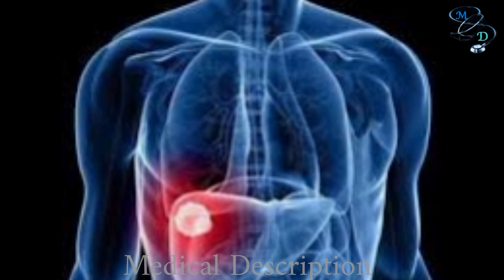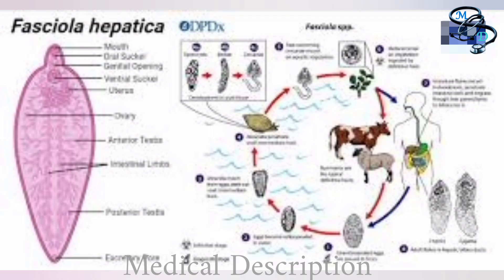Fascioliasis is a parasitic infection typically caused by Fasciola hepatica, which is also called the common liver fluke or the sheep liver fluke. A related parasite, Fasciola gigantica, can also infect people. Fascioliasis is found on all continents except Antarctica, in over 70 countries, especially where there are sheep or cattle. People usually become infected by eating raw watercress or other water plants contaminated with the mature parasite larva.